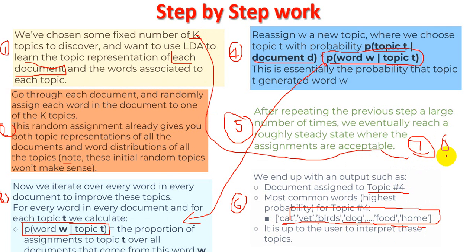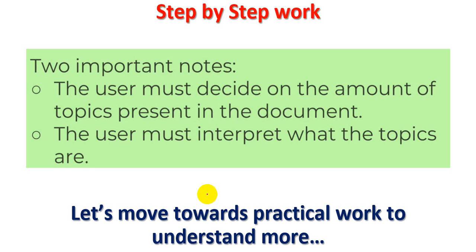For each specific topic we can see what distribution it has. We convert into probabilities and assign the word with the highest probability to that topic. One important concept before going to practical implementation: the user must decide on the number of topics K present in the document. The user must then interpret what the topics are and interpret the distribution — which probability will be our topic from the raw text.